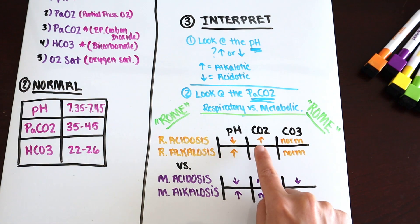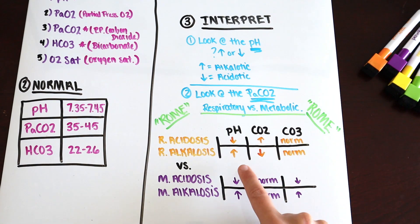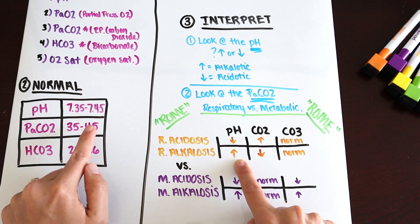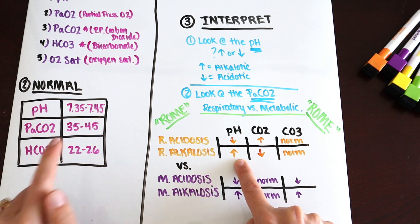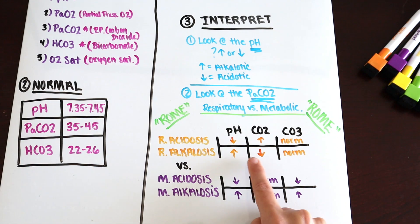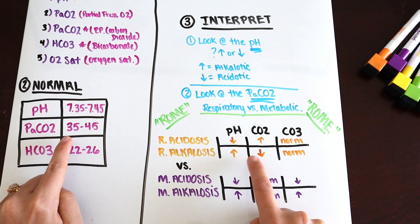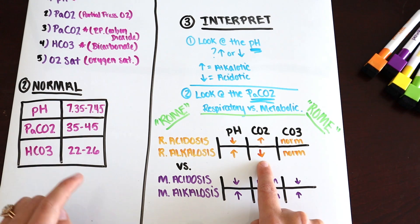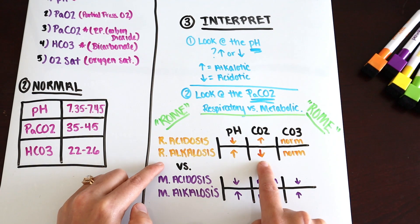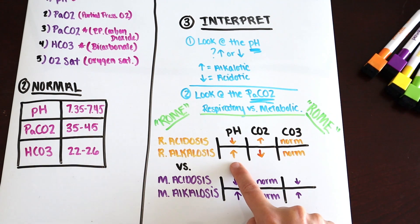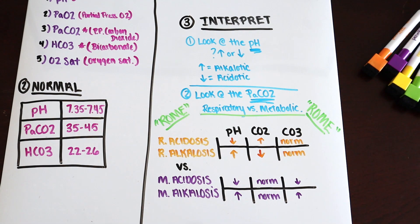For respiratory alkalosis, your pH is higher than 7.45. Also remember when looking at ABGs: if your CO2 is lower than 35, that tells you it is respiratory alkalosis because the CO2 is opposite the pH. Your arrows are a big indicator of what is going on with the patient.